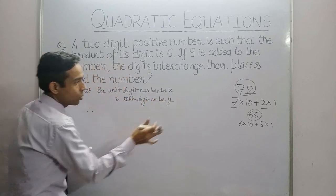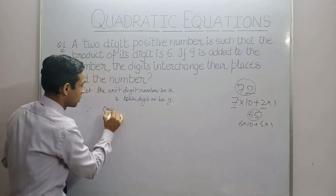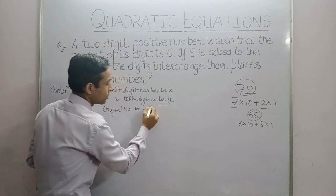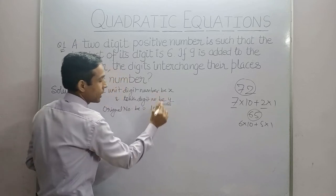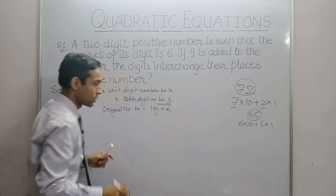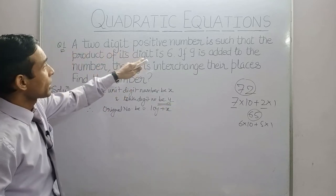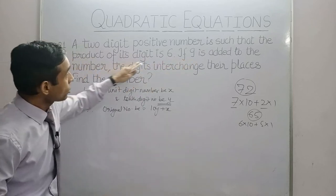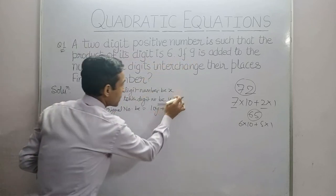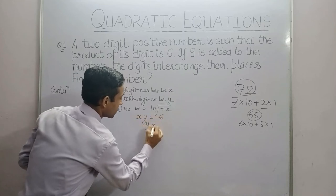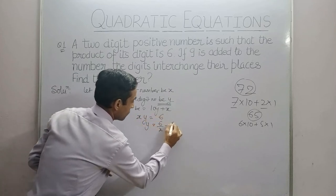So according to the expansion, let our unit digit be x and tens digit be y. Therefore, our original number = 10y + x. This is the number. Now, they say that the two-digit number is such that the product of its digits is 6. So digit product x and y is 6. That is y is equal to 6 upon x. This is our first equation.